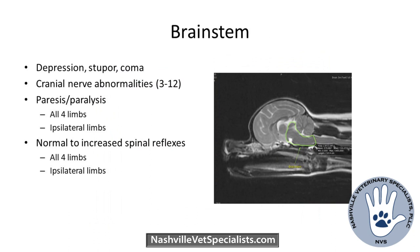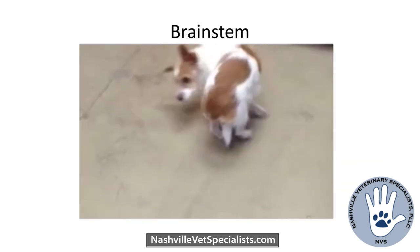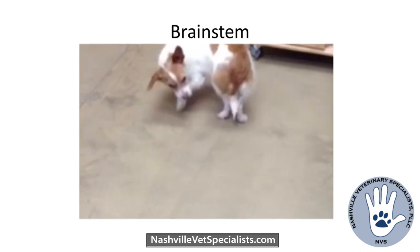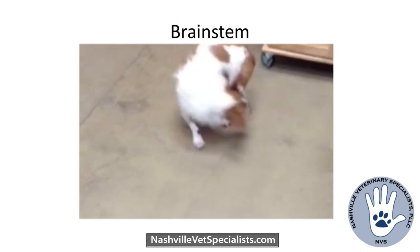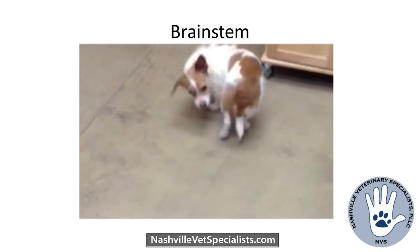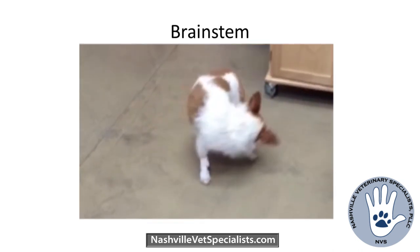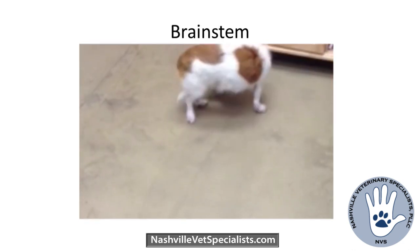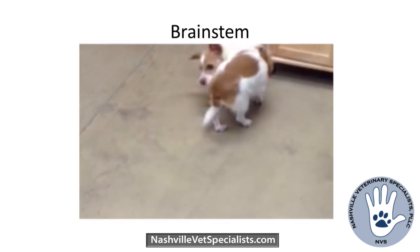When dealing with lesions in the brainstem, this is when you'll see significant ataxia or paresis affecting all four legs. The majority of your cranial nerves come from here — cranial nerves 3 through 12 originate from the brainstem. So any of these can be affected depending where in the brainstem the lesion is. This dog looks similar to the circling one we saw, but this one is more ataxic, stumbling, and has a definite head tilt.